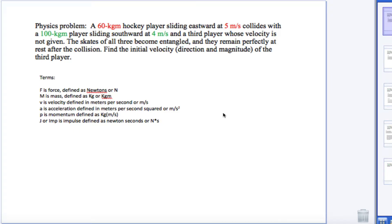This video is going to be about a physics problem. The problem is a 60 kilogram hockey player sliding eastward at five meters per second collides with a 100 kilogram hockey player going southward at four meters per second, and there's a third player whose velocity is not given.